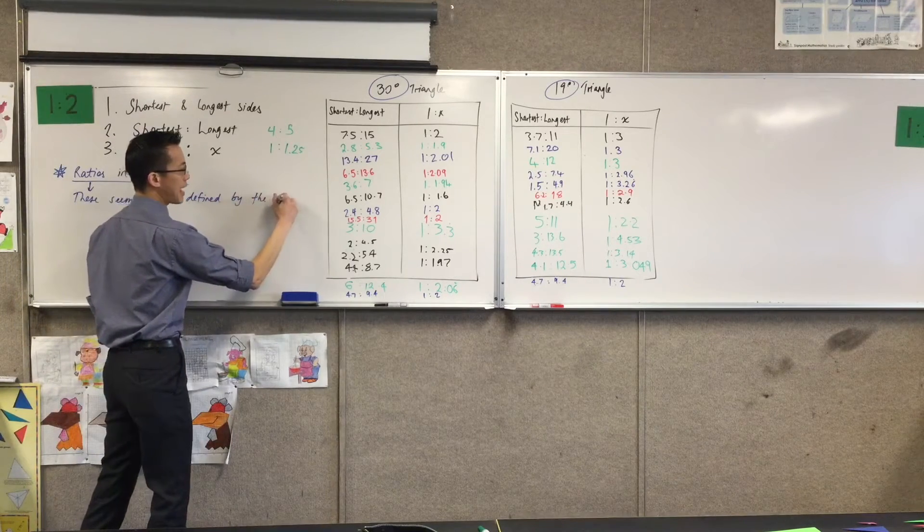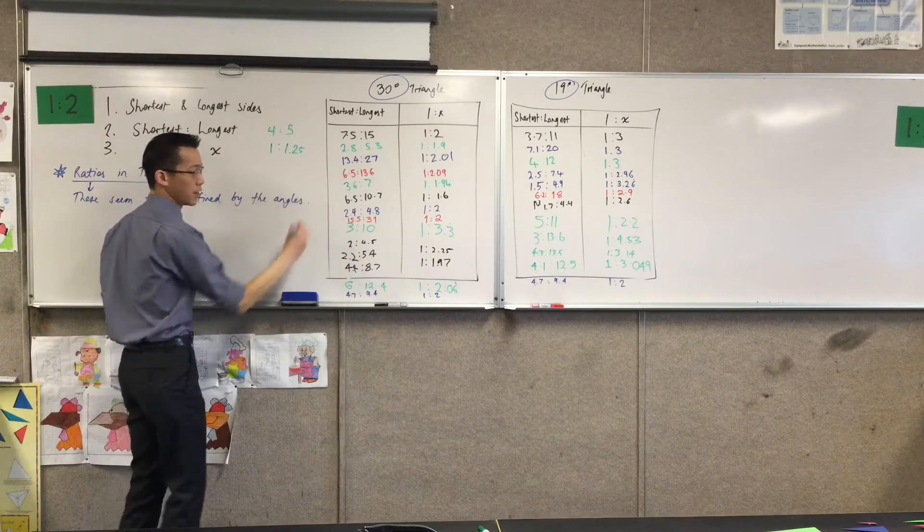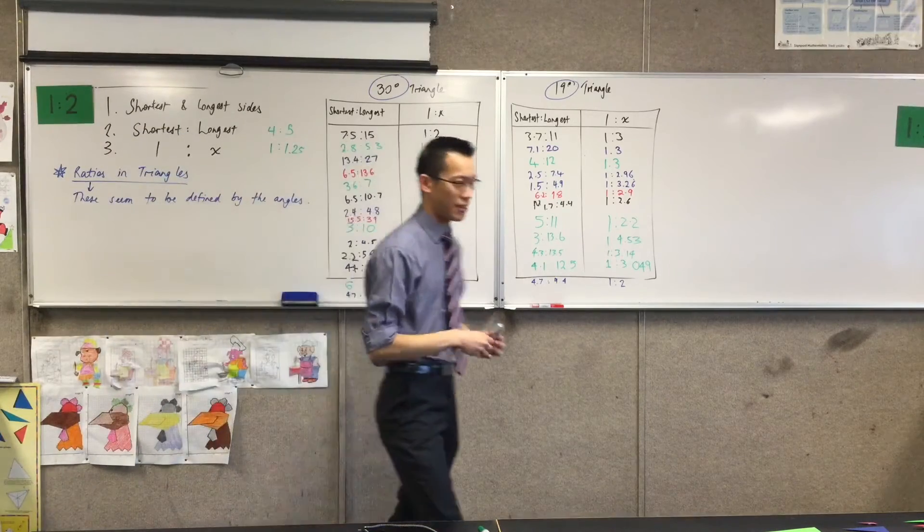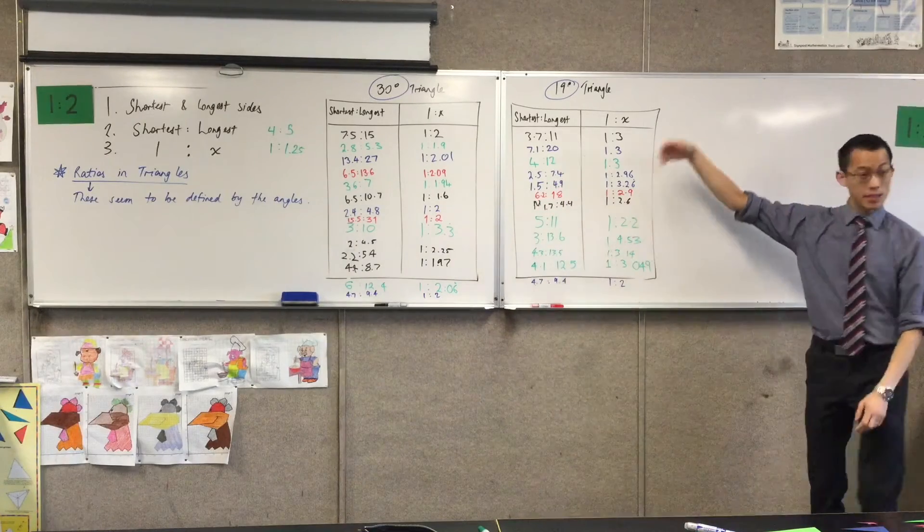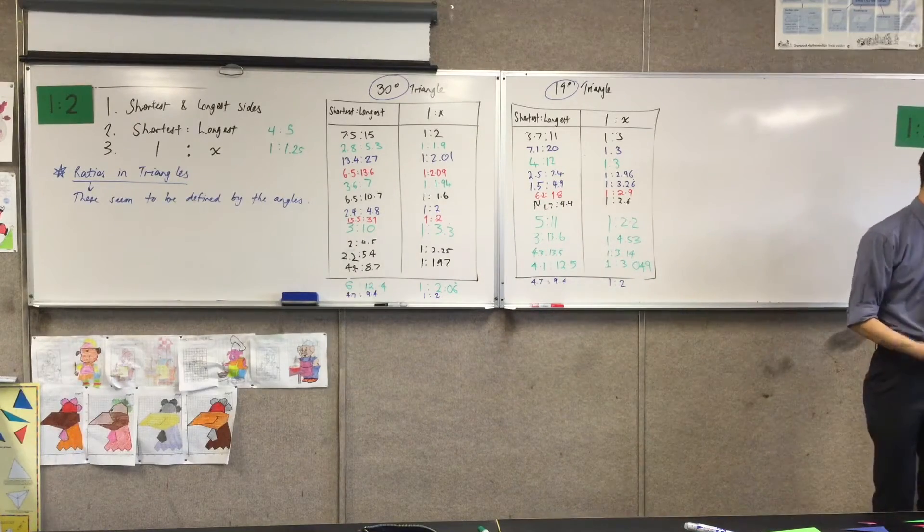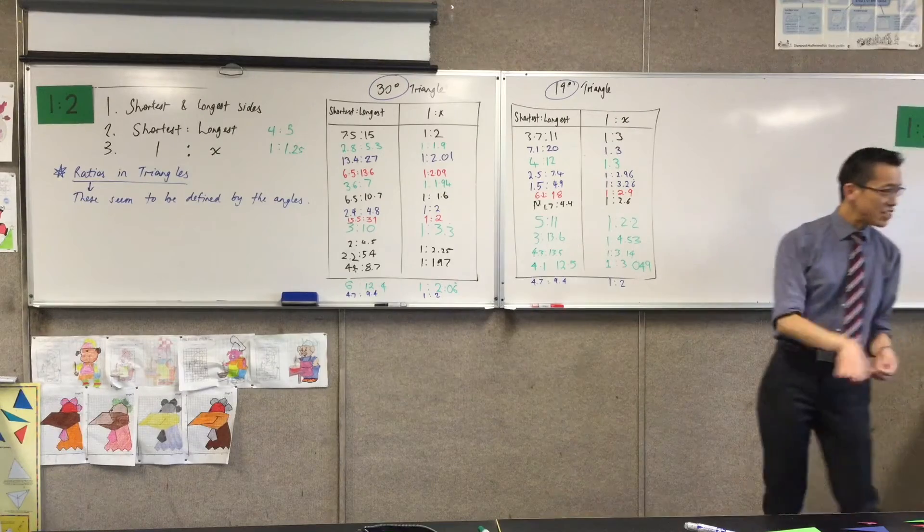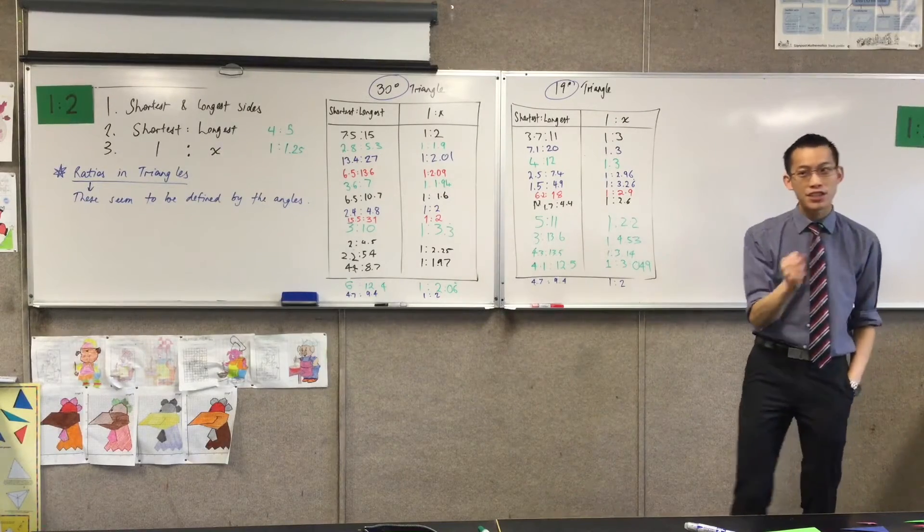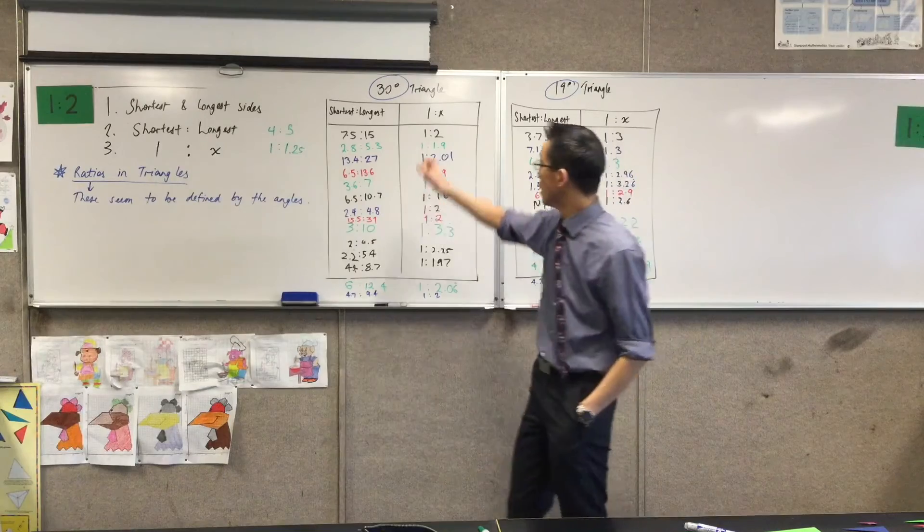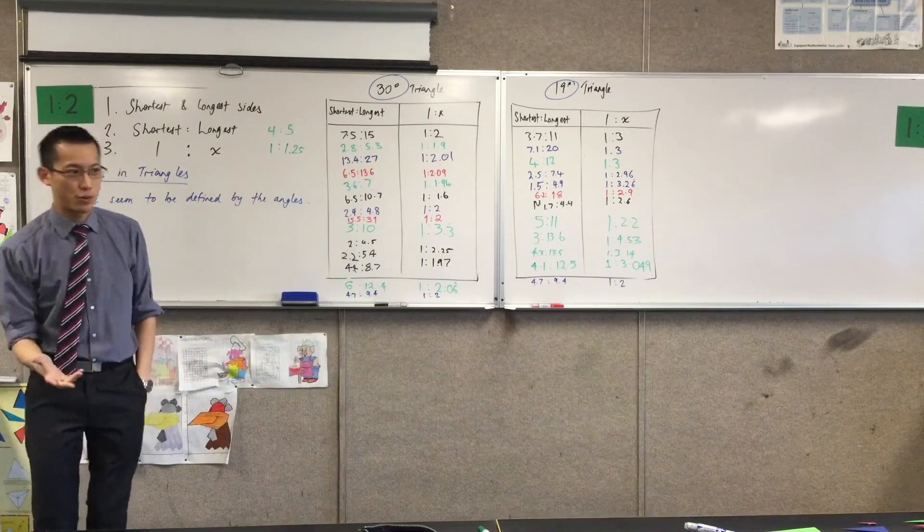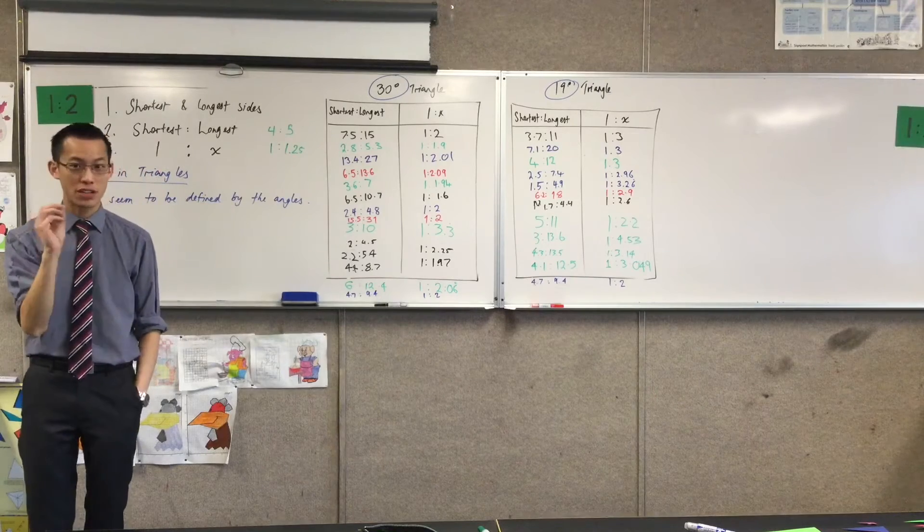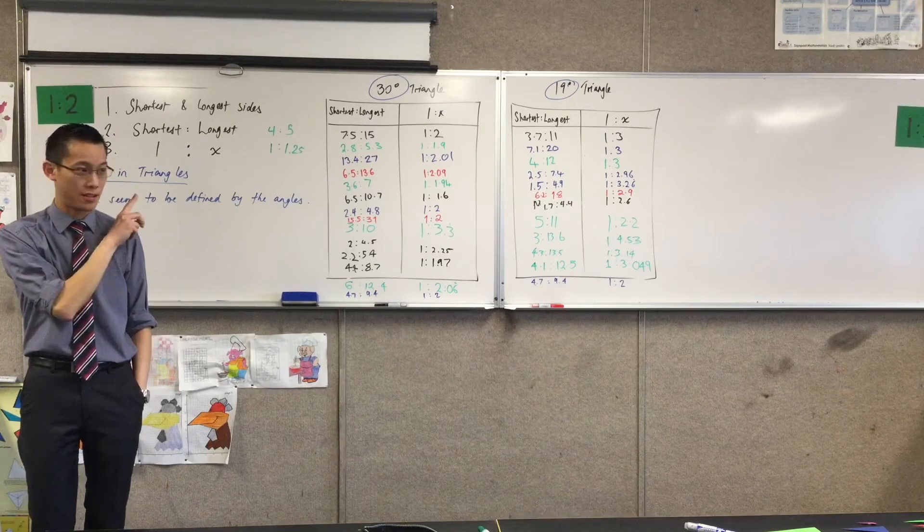Now, you'll notice I say angles plural, not angles singular, because I said 30 degrees, which seems like it's just one angle. And I said 19 degrees, which seems like it's just one angle. But I kind of ninja in the fact that I actually know every single angle in your triangle. Just by saying this, how do I know? It's actually something I haven't written on the board, which I told you at the beginning, as well as the 30 degrees. What else did I tell you?